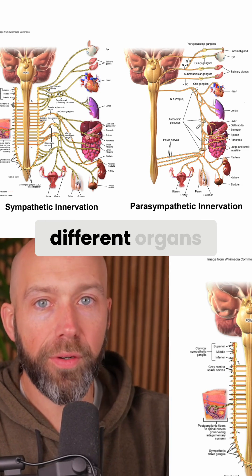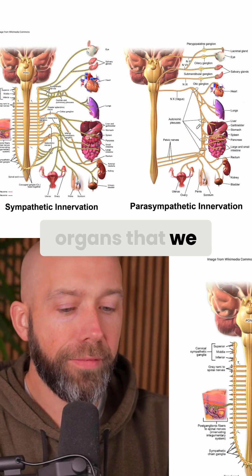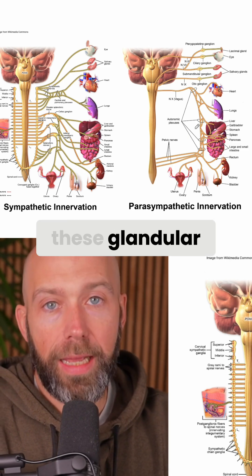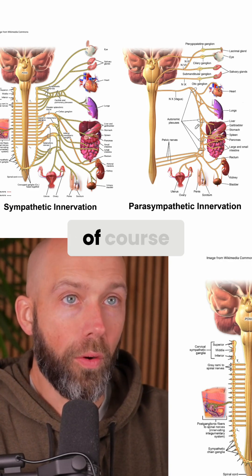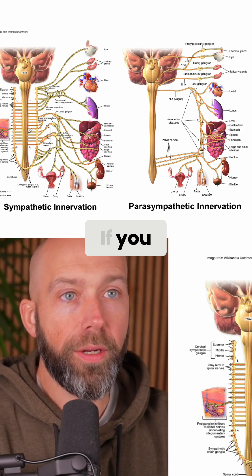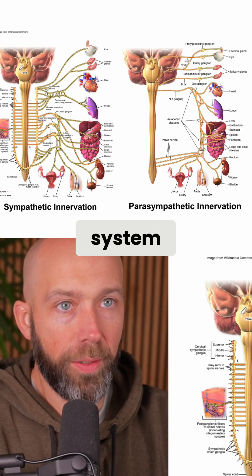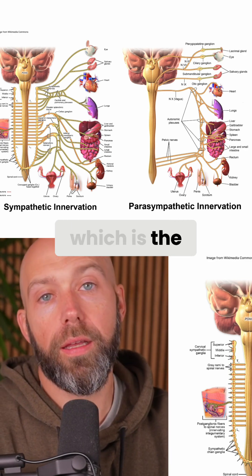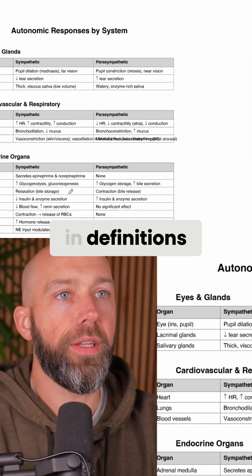We have many different organs, and one very important category is the organs that secrete hormones. These glandular organs that produce hormones are not to be seen separately in any way from the nervous system. If you want to see it very simply, we have an electricity system — which is the nervous system — and then we have a chemical system, which is the hormonal system. They are only separate in words, in definitions.